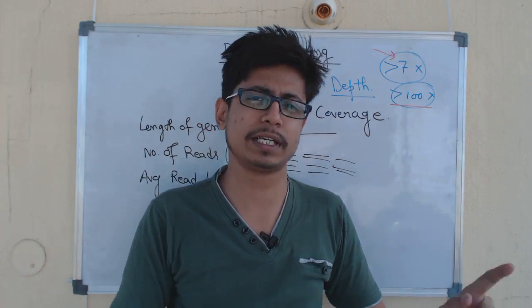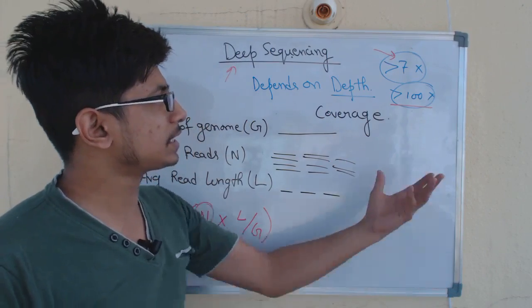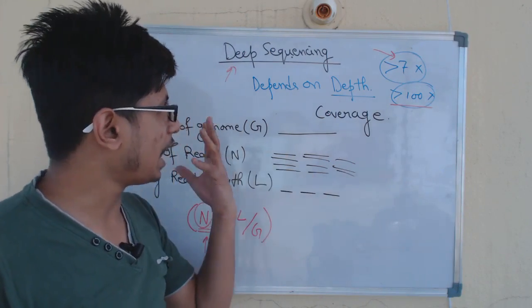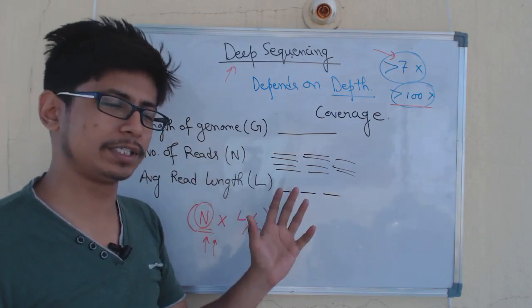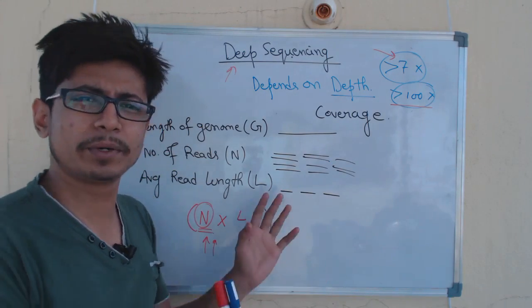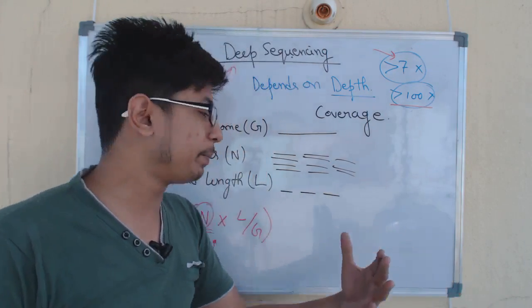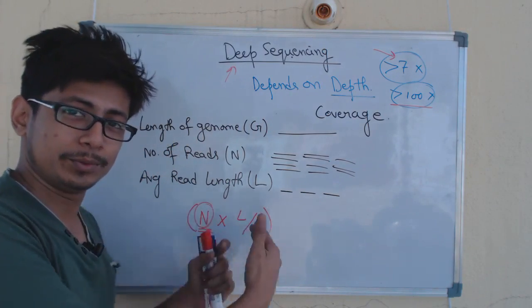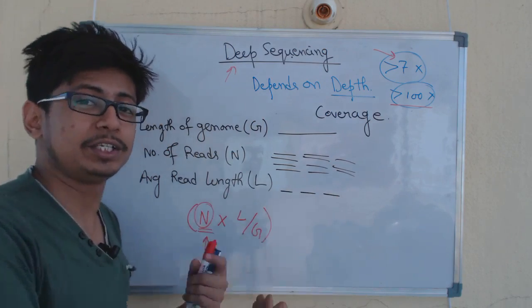You can run Illumina sequencing, and normally Illumina sequencing and most next-generation sequencing like Illumina or Ion Torrent sequencing, we run it more than seven times, so we call them deep sequencing. The whole process is known as deep sequencing and the sequencer we use we call a deep sequencer. There's nothing extra about it. The same processes and technologies are used, but it depends on how many times the sequencer reads your sequence.